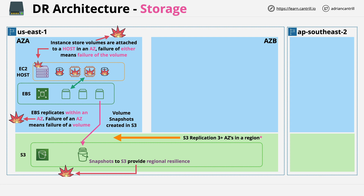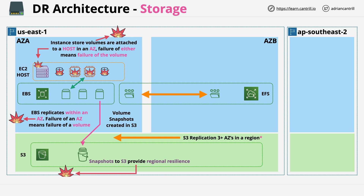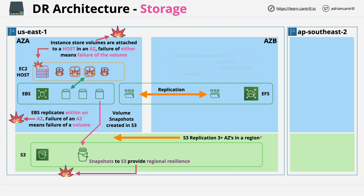Another storage service we can use is the Elastic File System, known as EFS. With this product you create file systems, and one file system is replicated across multiple different availability zones within a single region. An EFS file system can be mounted to Linux instances, and by default this type of storage can tolerate the failure of an availability zone — it would actually require an entire region to fail to impact an EFS file system.